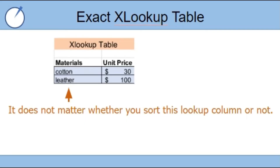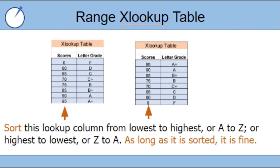Let's do a quick summary before we conclude. For the exact XLOOKUP, it does not matter whether you sort the lookup column or not. For the range lookup, you should sort the lookup column — whether lowest to highest, A to Z, or highest to lowest, Z to A — as long as it is sorted, it's fine. That concludes our lesson covering two types of XLOOKUP: range and exact. Thank you for watching and we'll see you next lesson.